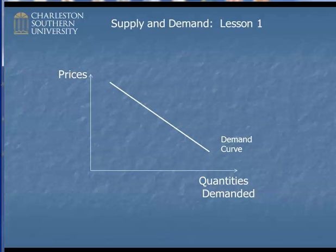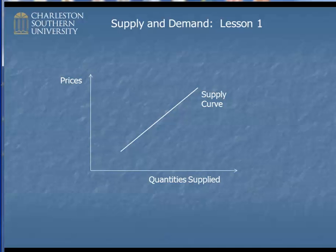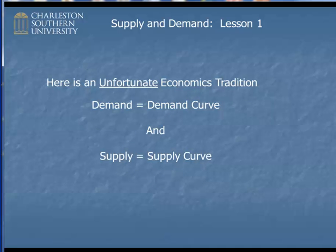This is what the demand curve normally looks like in a principles class — it's a function that plots out the set of ordered pairs between prices and quantities demanded. Here's how you would think about this graphically. Imagine there are two prices, P1 and P2. At price P1, the quantity demanded would be marked as Q1. When the price goes down to P2, the quantity demanded would increase out to Q2. So when the price goes down, people bought more — that's the quantity demanded. But notice that the demand curve, that schedule of all possible prices and corresponding quantities demanded, stayed exactly the same. This is also true for the supply curve.